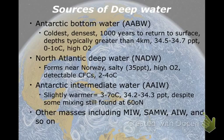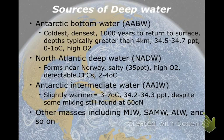Antarctic Bottom Water can actually get to negative temperatures — around negative one degree up to about one degree Celsius. Because of the pressure, the ice can't freeze even at those temperatures. Because it's cold, it has a lot of oxygen, and it has sort of medium salinity.